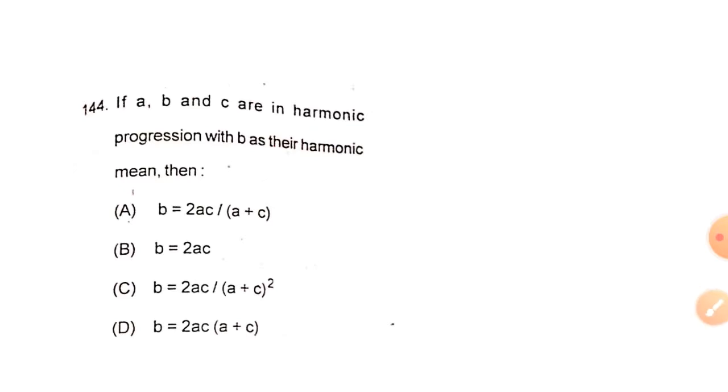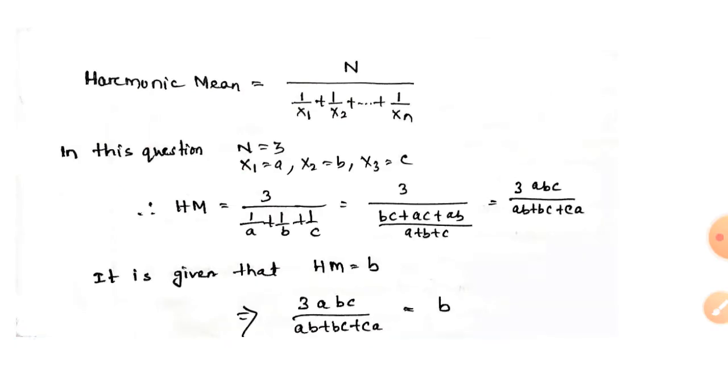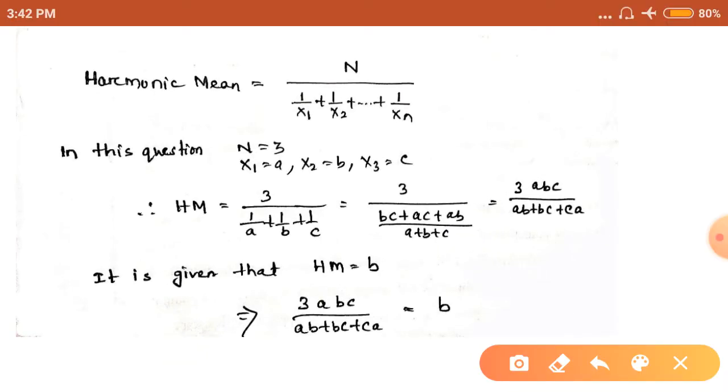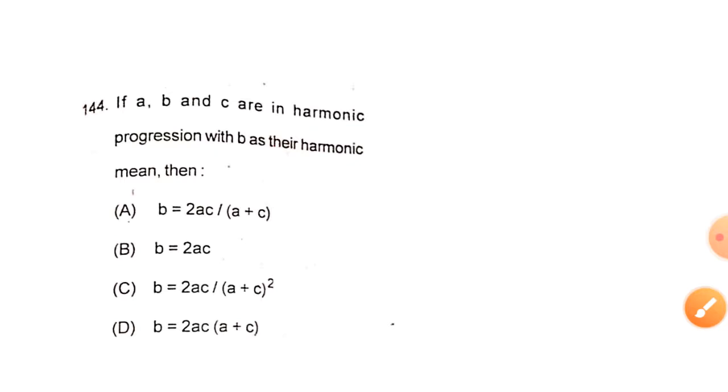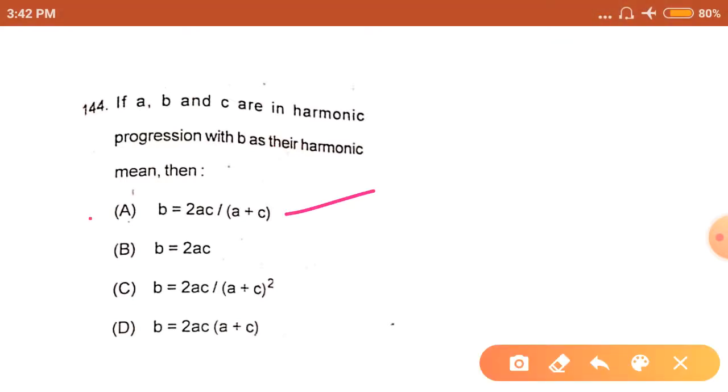If A, B, and C are in harmonic progression with B as their harmonic mean, then what is the value of B? The formula of harmonic mean is... What is the number of observations? This is 3. The observations are A, B, and C, so harmonic mean becomes 3ABC divided by AB plus BC plus CA, which is equal to B. Solving this we will get 2AC divided by A plus C equals B. The answer is option A.